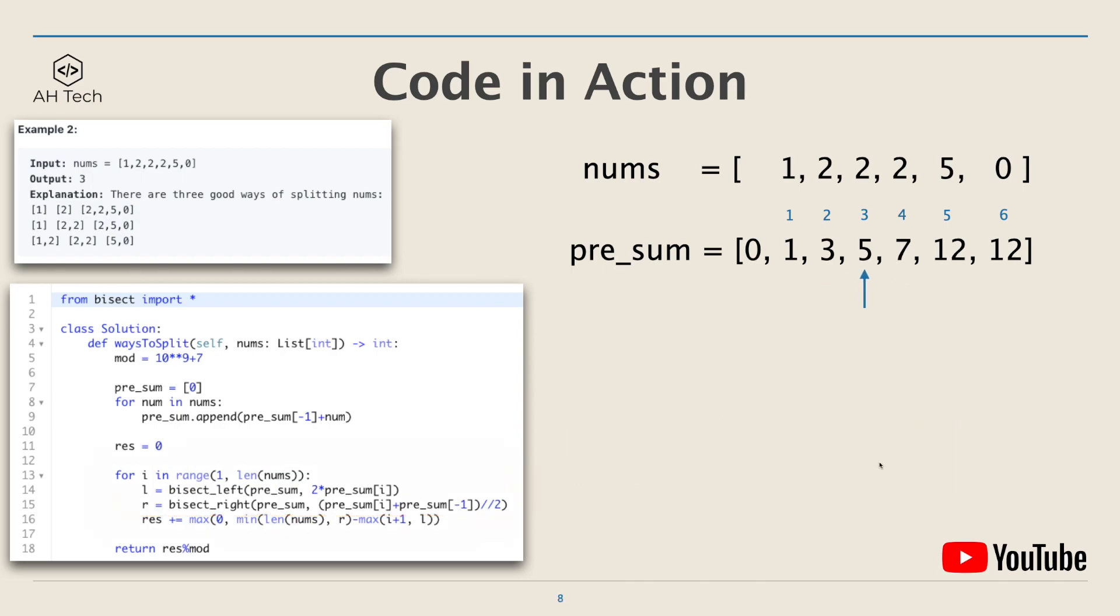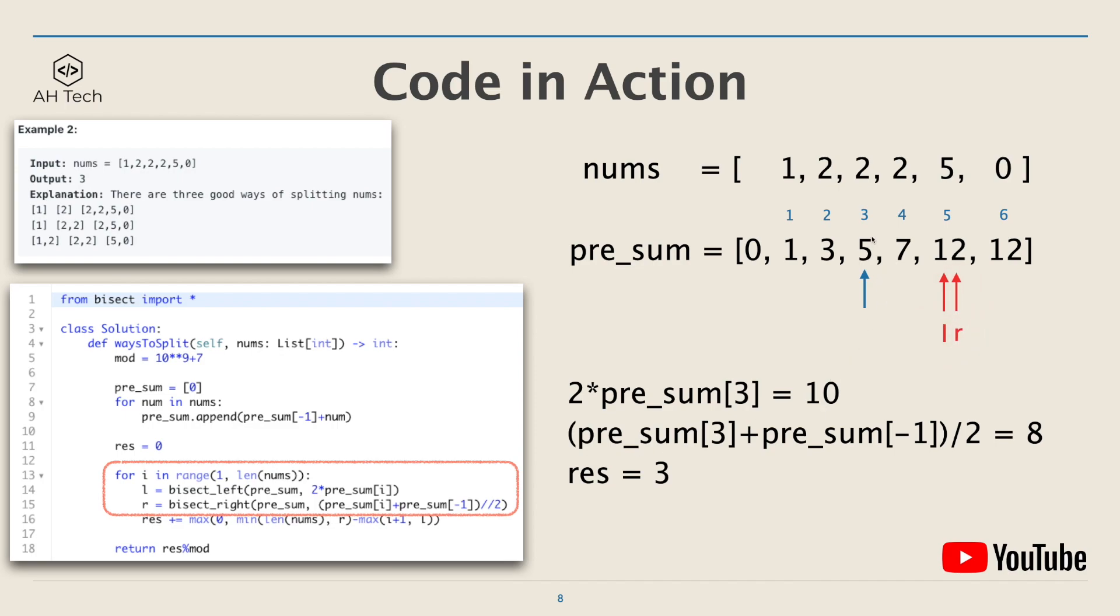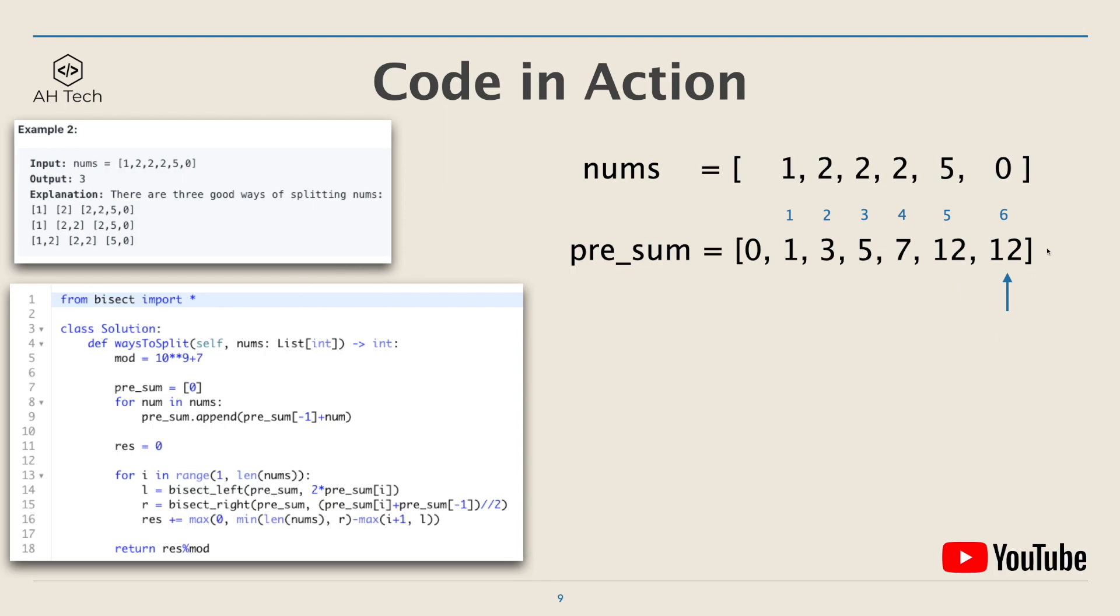At index three, following the same process, the left and right boundary will both be at index five. So res won't be updated and will still be three. This will be the same when we move to index four and five.